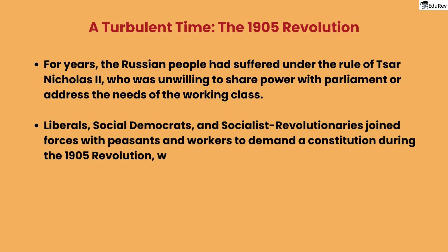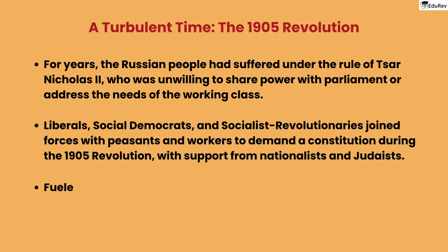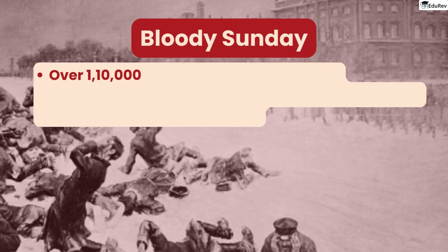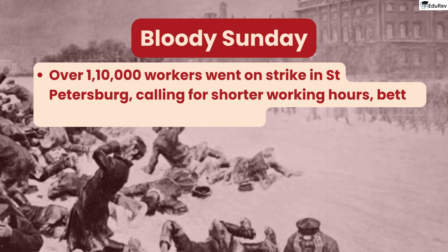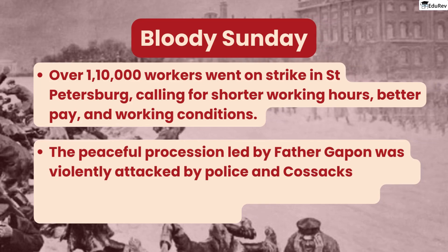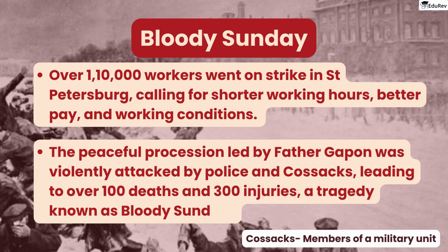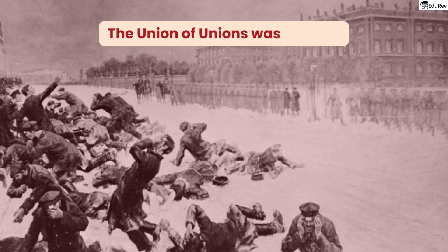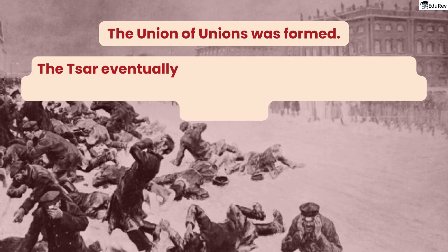Fueled by rising prices, declining wages, and bad working conditions, workers and peasants across the country had had enough. Over 110,000 workers went on strike in St. Petersburg, calling for shorter working hours, better pay, and working conditions. The peaceful procession led by Father Gapon was violently attacked by police and Cossacks, leading to over 100 deaths and 300 injuries — a tragedy known as Bloody Sunday. Despite this tragedy, the Union of Unions was formed, demanding a constituent assembly. The Tsar eventually allowed an elected consultative parliament or Duma, but political activity was severely restricted.